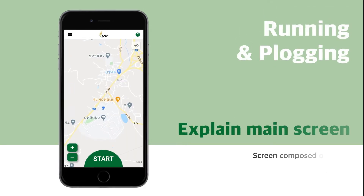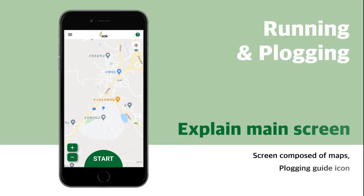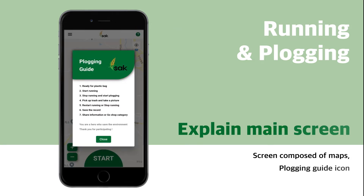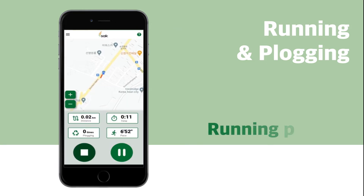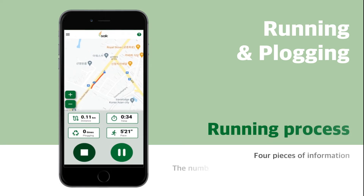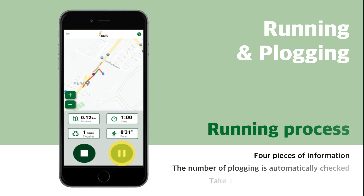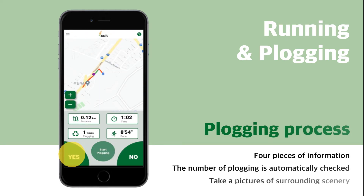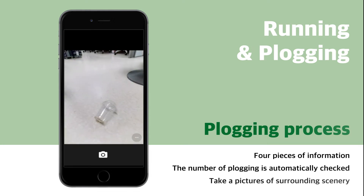On the main screen, it starts with a screen composed of maps. If you click on the top right, you will see the plogging guide. When you start running, you will see a screen consisting of four pieces of information. If you stop running, the plogging start button appears.